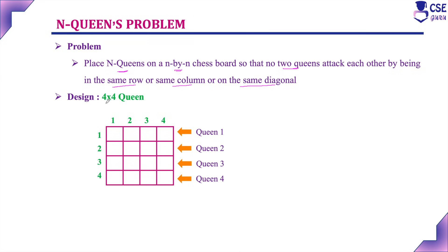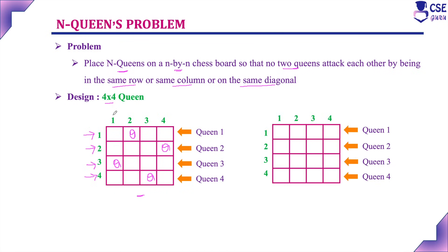For example, here we have shown a 4x4 Queens problem. We have to place one queen in each of the 4 rows such that no two queens attack each other by being in the same row, same column, or on the same diagonal. This is one solution for the 4x4 Queens problem, and one more solution is also possible. This is nothing but the N-Queens problem.